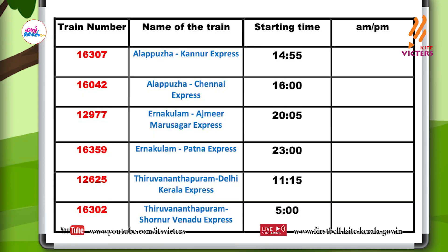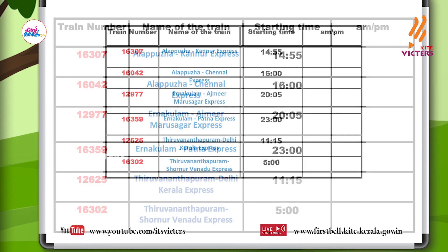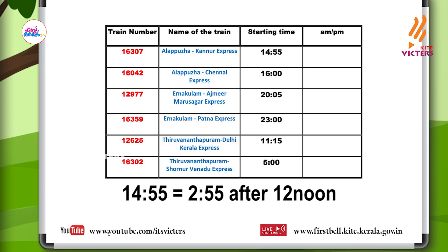Now look at this table. This table shows the starting times of some trains. Write these using AM or PM. The first train is train number 16307. Its name is Alapulla Kannur Express. Its starting time is fourteen fifty-five. What do you mean by fourteen fifty-five? It is two fifty-five after twelve noon. So in AM/PM, we can write it as two fifty-five PM.